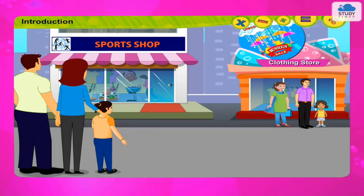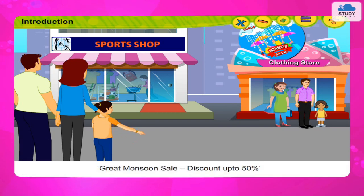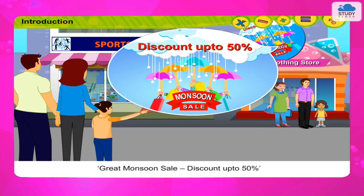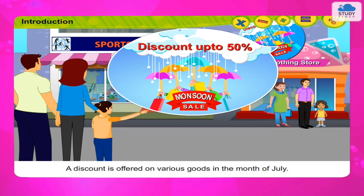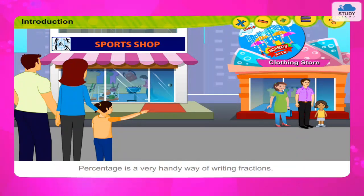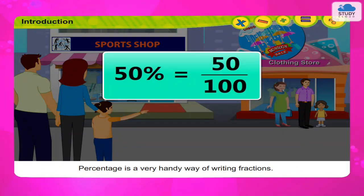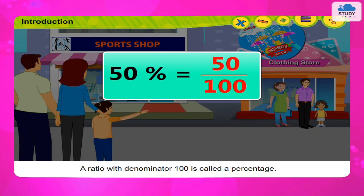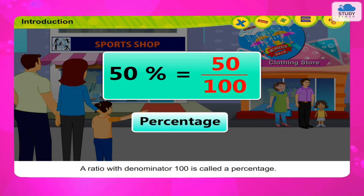Discount and Commission. Introduction: Great Monsoon Sale — Discount up to 50%. You may have seen such advertisements. In such a sale, a discount is offered on various goods in the month of July. Shops' advertisements on products show these discounts as percentages. Percentage is a very handy way of writing fractions. A ratio with denominator 100 is called a percentage.